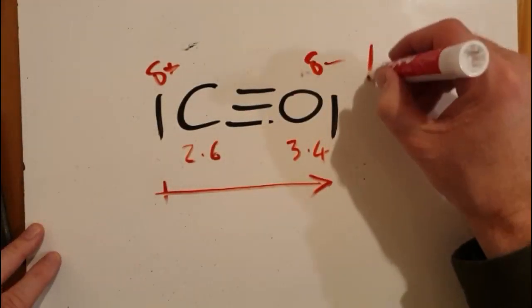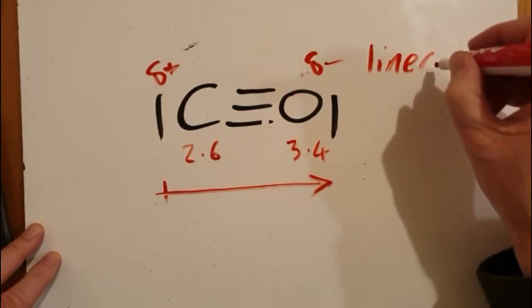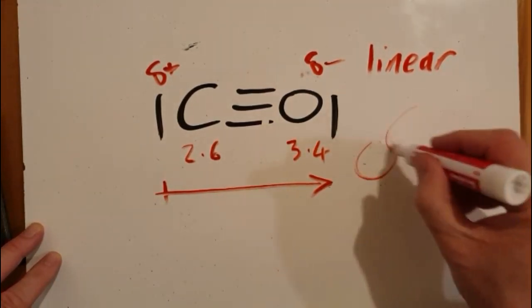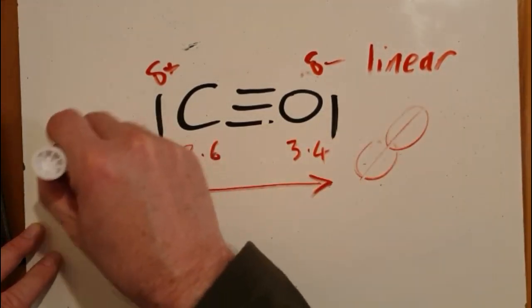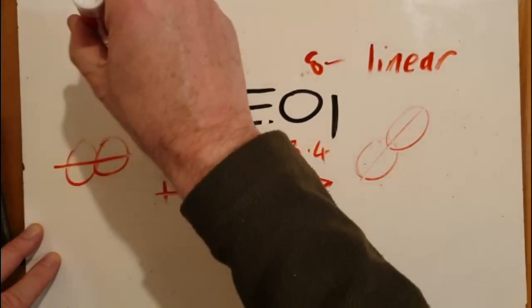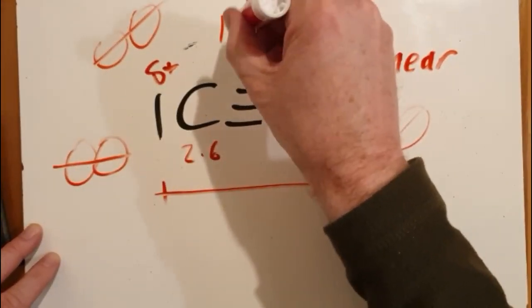So the molecule is going to be linear. All diatomic molecules are linear. If you've got two balls, it doesn't matter how you line them up. You're always going to be able to draw that line through them. It's going to be 180 degrees.